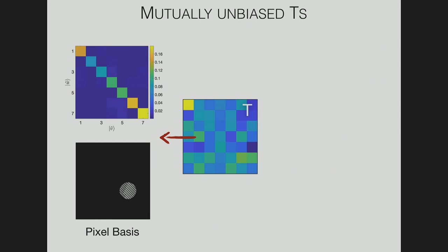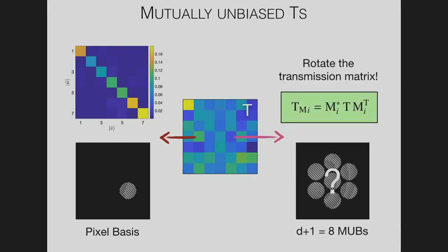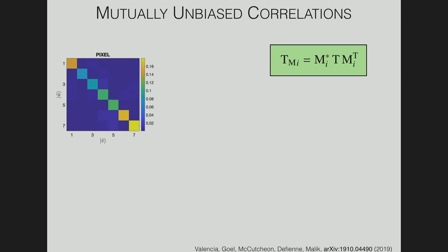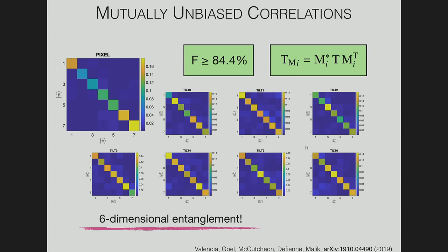This is not enough to certify entanglement — you need at least two bases. So we take the information about our transmission matrix and rotate it using math to access the transmission matrix in all the mutually unbiased bases of our seven-dimensional mode space. Doing that, we find we can get correlations back in all eight MUBs of this pixel mode space, and we can certify a fairly high fidelity that tells us we have six-dimensional entanglement.